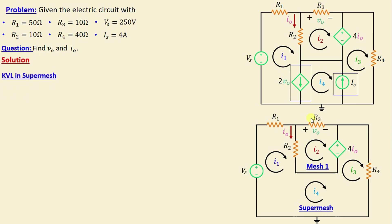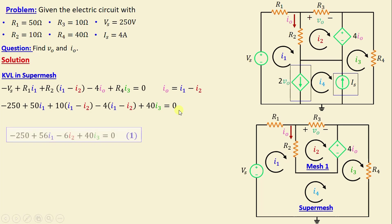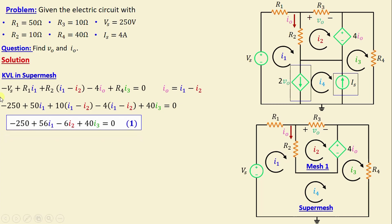By applying Kirchhoff's Voltage Law in the super mesh, we can write: VS + R1·I1 + R2·(I1 − I2) − 4·IO + R4·I3 = 0. We note that IO = I1 − I2. Substituting IO into the equation, we obtain: −250 + 50·I1 + 10·(I1 − I2) − 4·(I1 − I2) + 40·I3 = 0. We call this Equation 1.